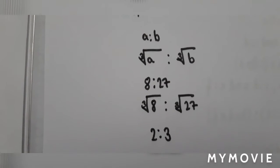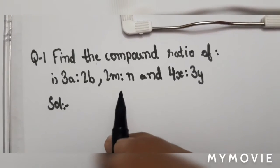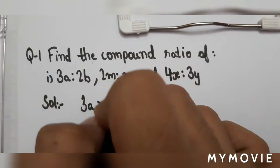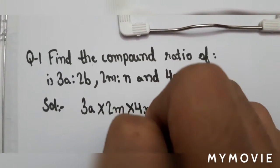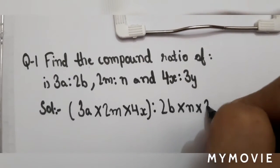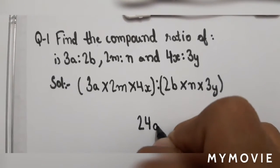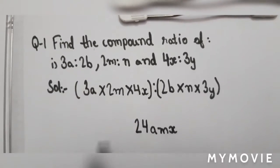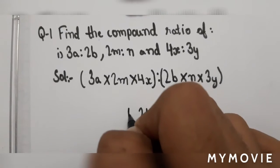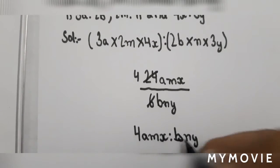Now we are going to solve questions. Our first question is: find the compound ratio of 3A:2B, 2M:N, and 4X:3Y. For compound ratio, multiply the numerators: 3A × 2M × 4X = 24AMX, and the denominators: 2B × N × 3Y = 6BNY. Simplifying 24 ÷ 6 gives 4, so the answer is 4AMX : BNY.